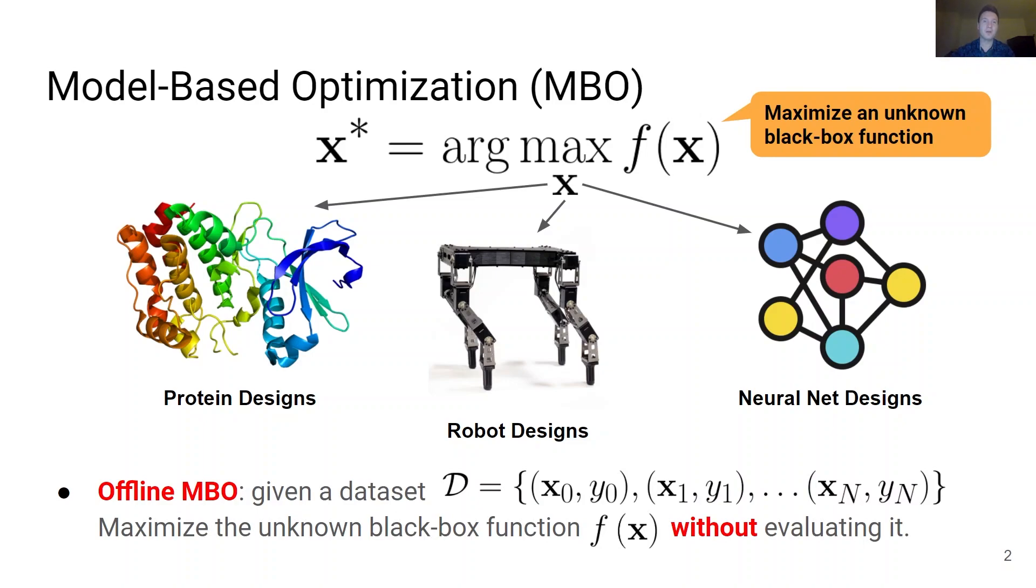While model-based optimization is a general and important paradigm, model-based optimization algorithms often learn via trial and error. They require actively querying the black box function on solutions proposed by the learning procedure iteratively. This is extremely expensive in a number of domains and may require performing physical experiments in a lab or actually building numerous robot systems.